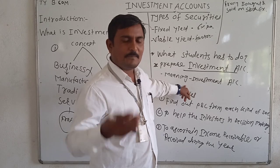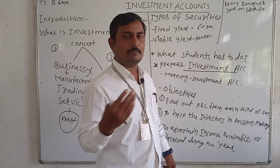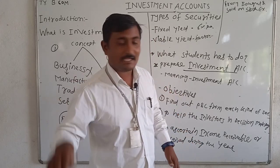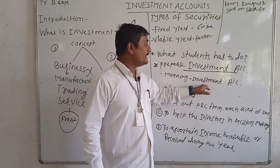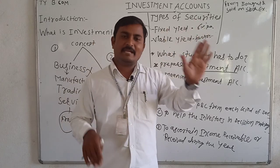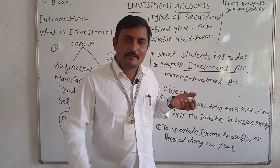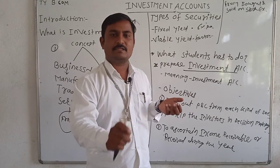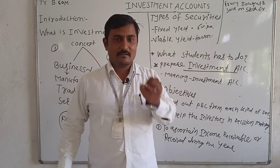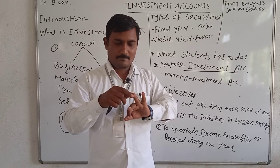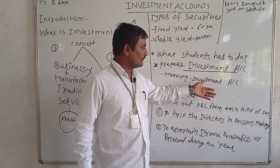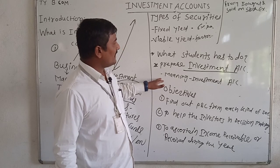Since investment is an asset, just like any other asset — for example, when we purchase machinery the entry is: Machinery Account Debit, to Bank; when we sell machinery: Cash Account Debit, to Machinery — the same rule applies. The investment account ledger has a debit side and a credit side. Whenever the investor purchases an investment, debit it; whenever the investor sells, credit it. The columns include: date, particulars, capital (cost), interest or dividend — same on both sides.